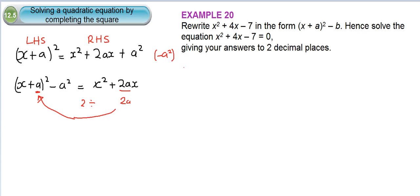First off, let's write the equation on this side. So we have x squared plus 4x minus 7. And we are asked to rewrite it in the form x plus a squared minus b.